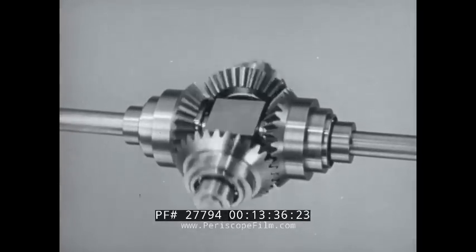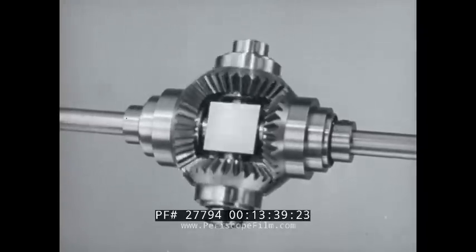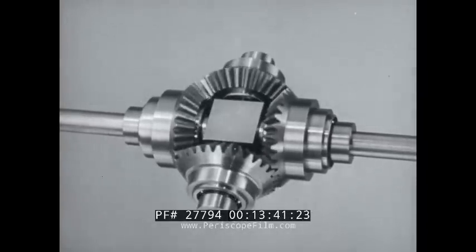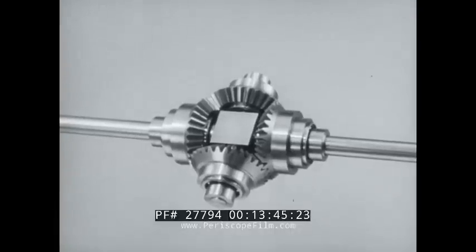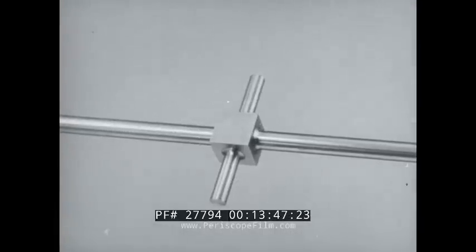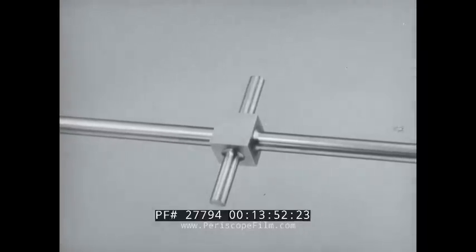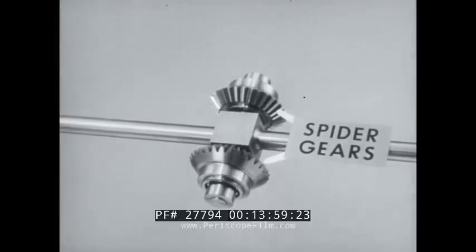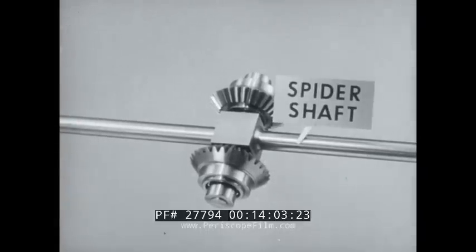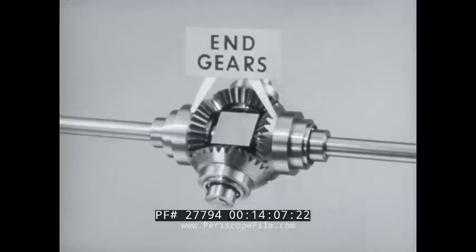To understand how it works, it's necessary to know something about its construction. Remove the gears, and you see two shafts. They are solidly joined together. The shafts and these gears form an assembly called the spider. These are the spider gears. This is the spider shaft. And these are end gears.